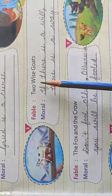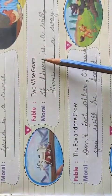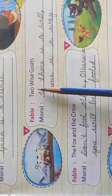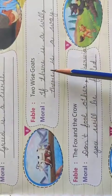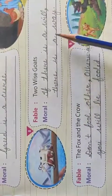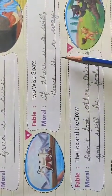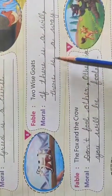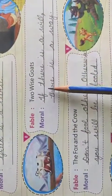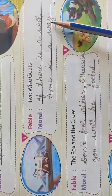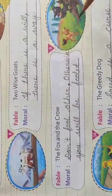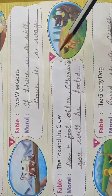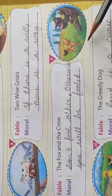Number 8: Two Wise Gods. The moral is: if there is a will, there is a way.